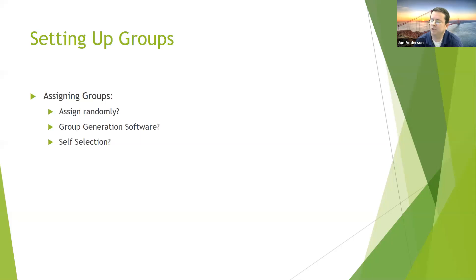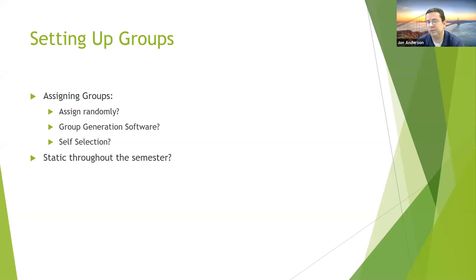The third option — self-selection — is what I'm currently using, where I let students select who they're going to work with. Many times these students don't know each other prior to class, though occasionally I'll have roommates or couples wanting to work together. Another consideration is whether the group stays static throughout the entire semester or whether you mix up groups as you go. I personally lean toward static grouping, as it allows students to become more familiar with each other, learn strengths and weaknesses, and not reinvent the wheel every time they start a new project.